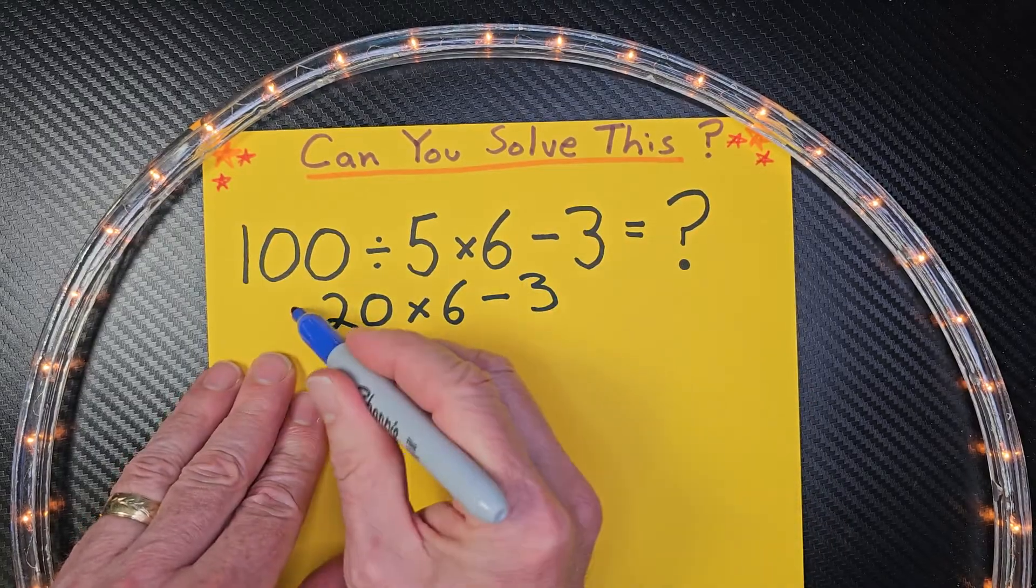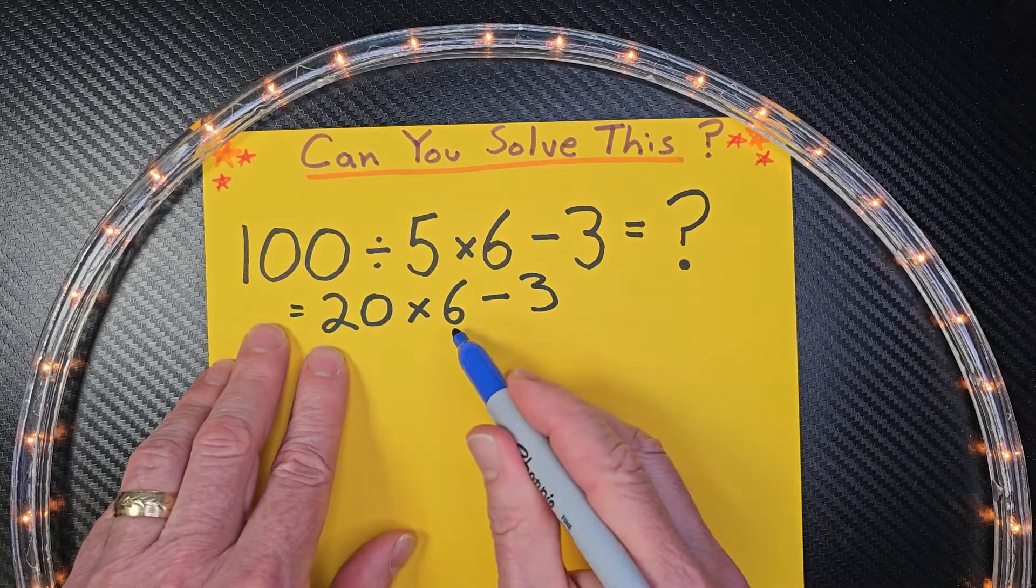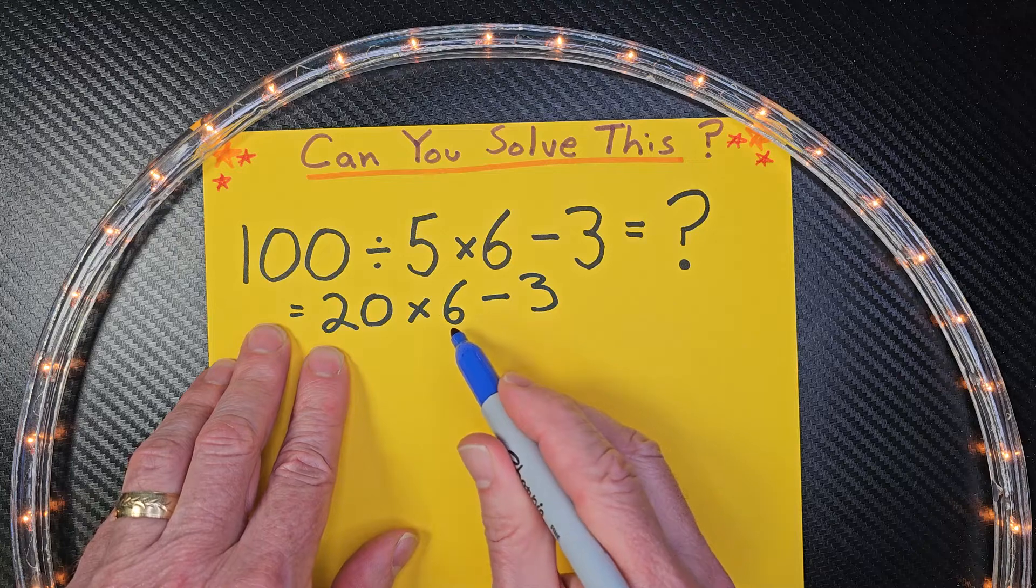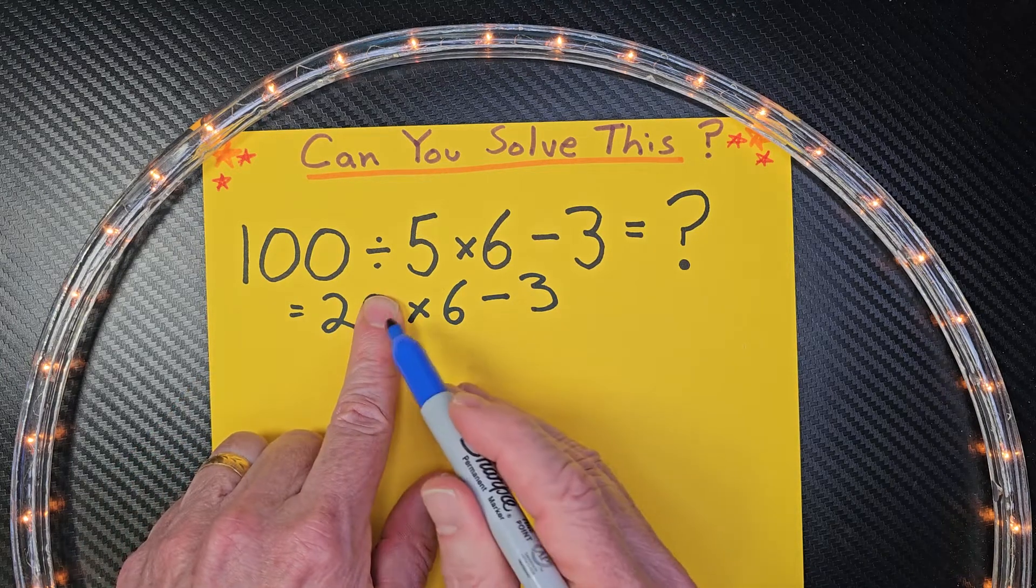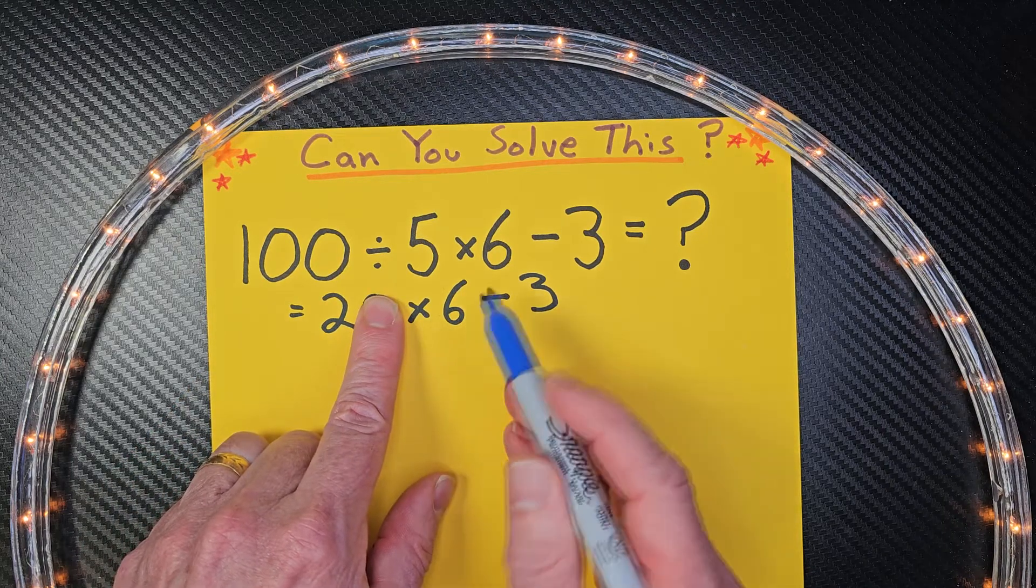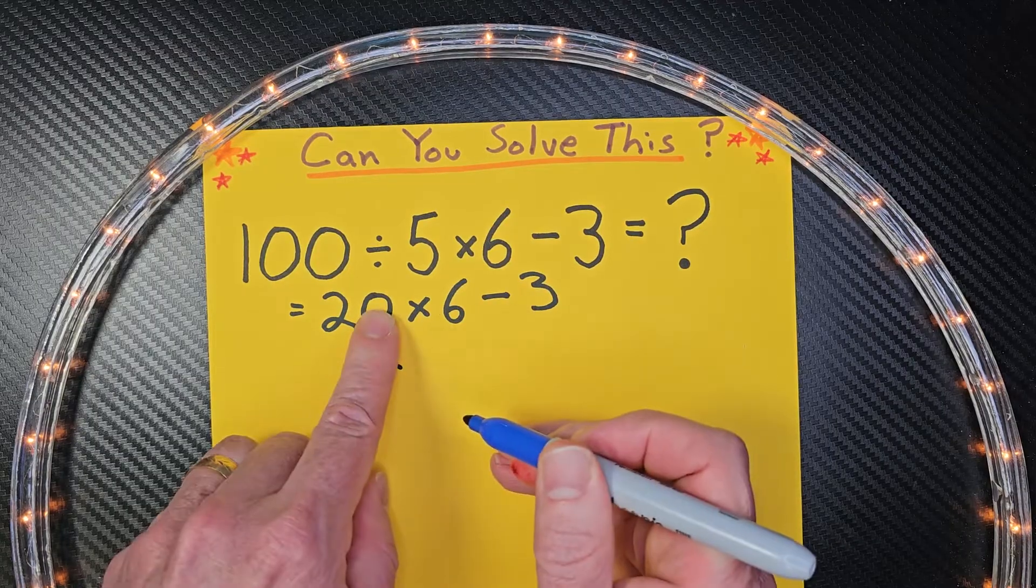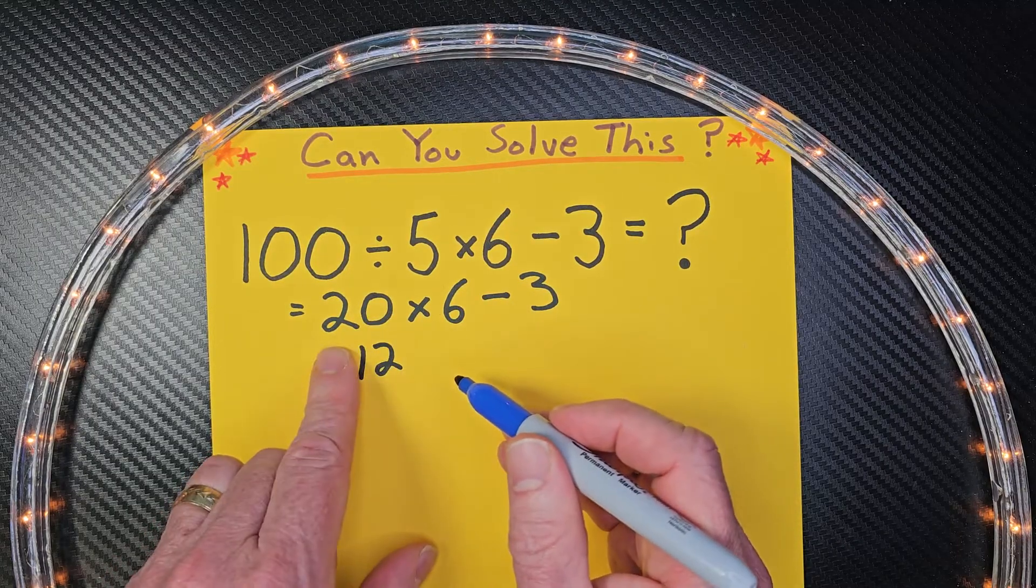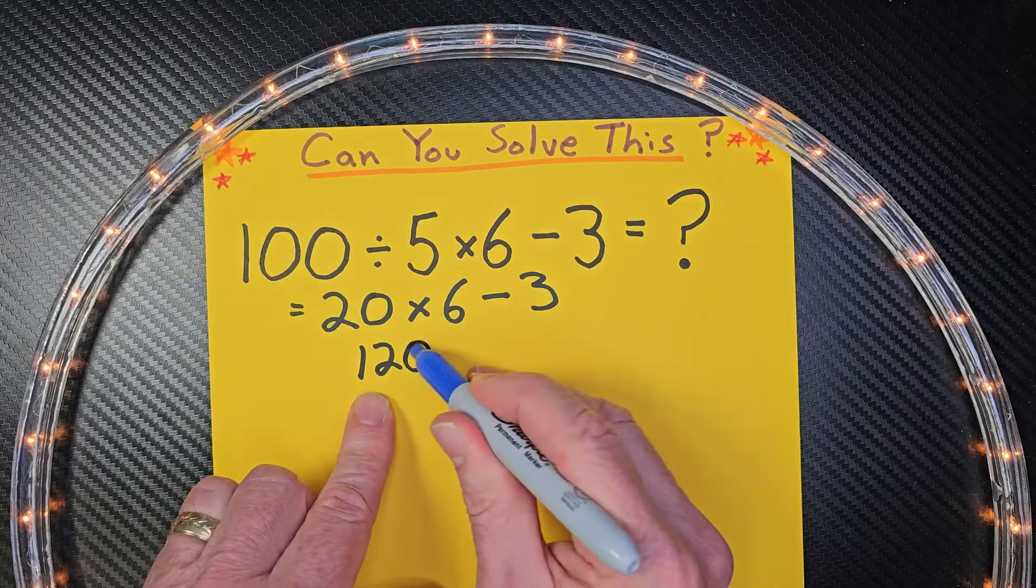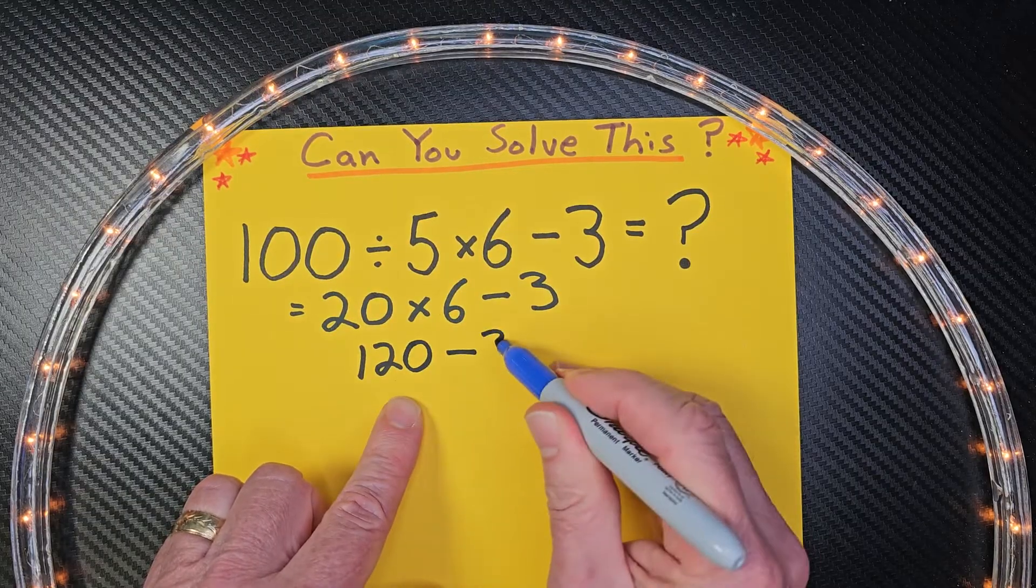20 times 6. If you're not familiar, take that 0 off there. What is 2 times 6? 12. And then you just add the 0. So 20 times 6 would be 120 minus 3.